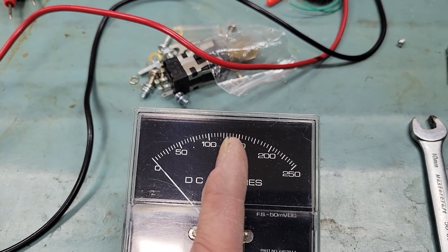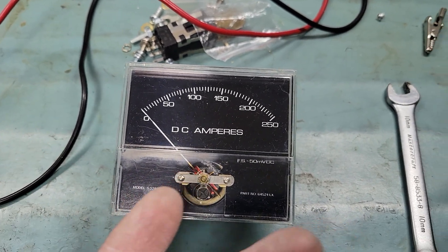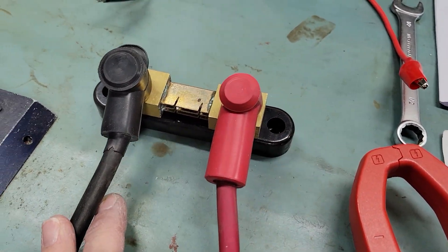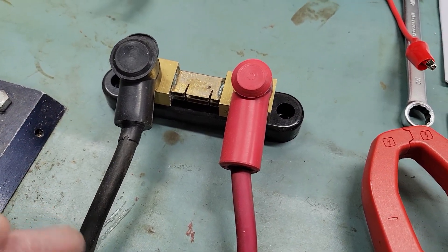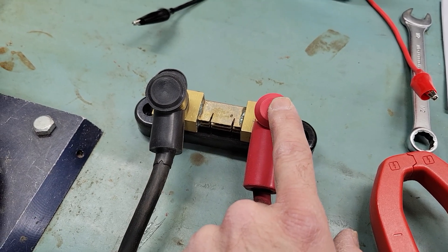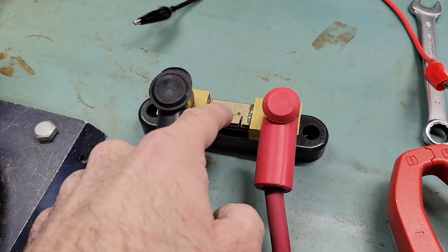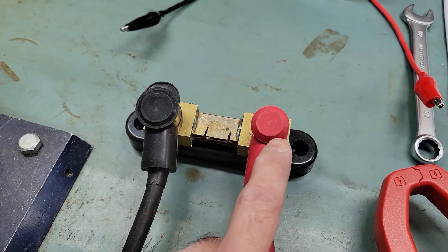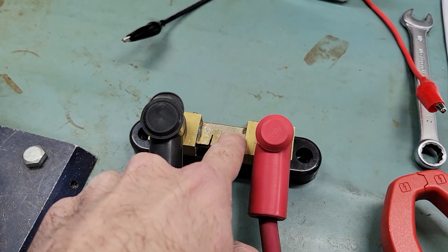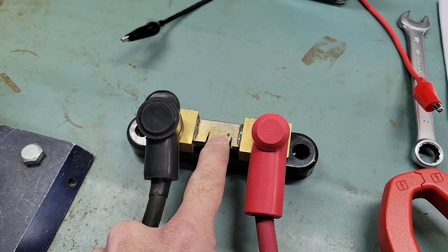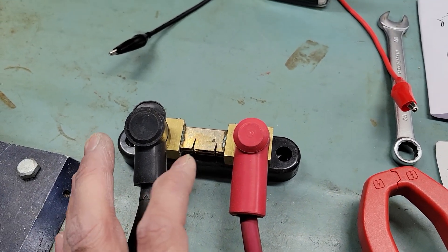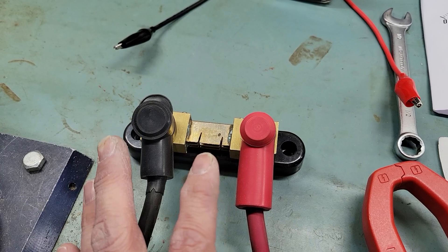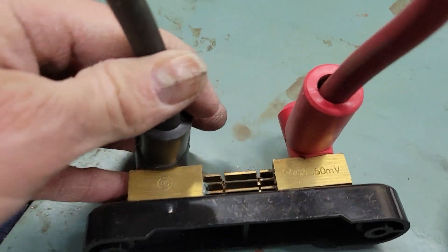Those millivolts come from what is called a shunt. A shunt is in fact a kind of resistor, a calibrated precision resistor normally that you will connect in series with your circuit and it will create a voltage drop. When there's a given current, this kind of resistance here will have a voltage drop because it's not a perfect conductor.